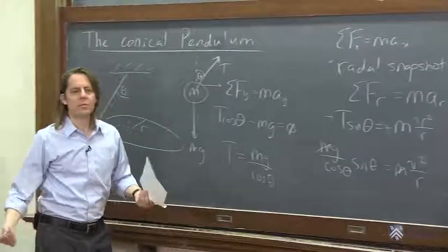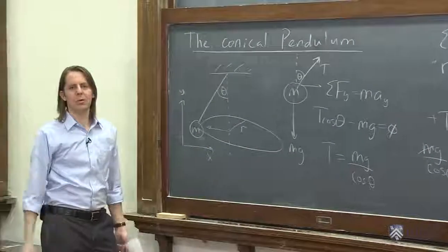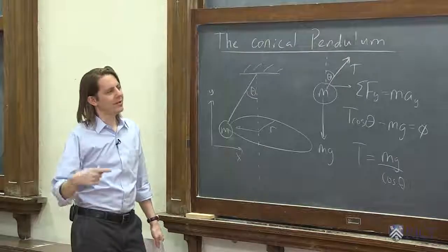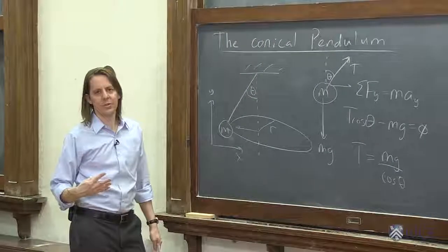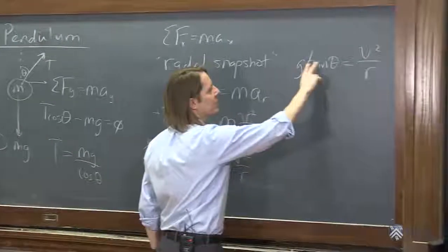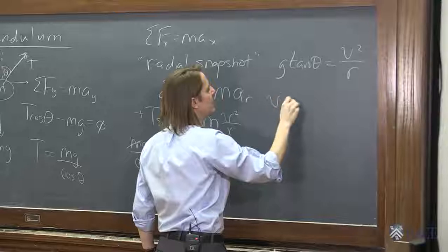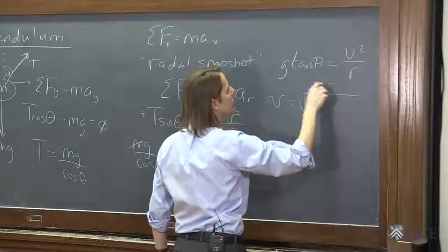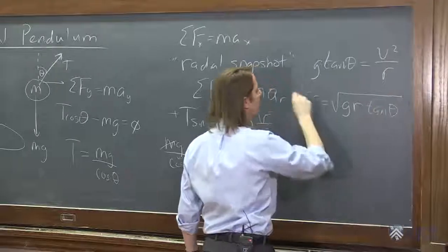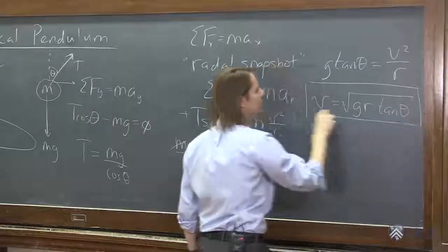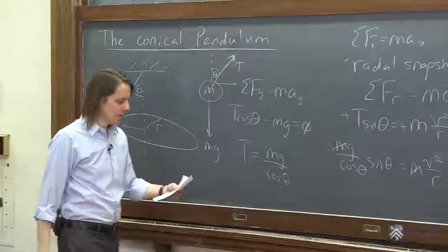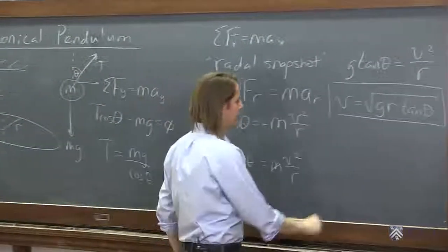And then I realized we never asked a question. We just started going crazy. So what we really wanted to think about is the relationship between how fast it's going and how big the angle is. That's kind of what we're looking for here. So we can see that here. We can solve this. And we find that v is equal to the square root of g r tangent theta. So we get this kind of weird relationship between v and the angle.